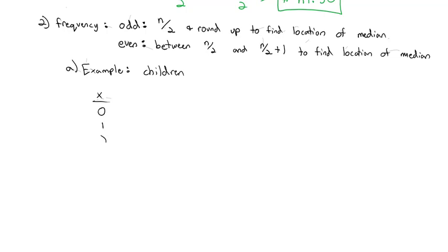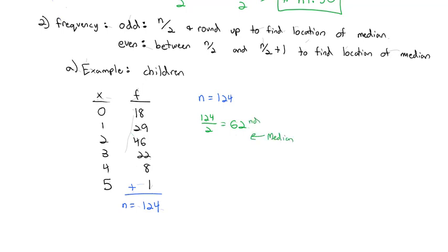Back to our example with the number of children, we had this frequency table of 0, 1, 2, 3, 4, 5 children with frequencies of 18, 29, 46, 22, 8, and 1. First thing I need to know is the total number of families that were interviewed, the total frequency, the n. I do that by adding the frequencies, and we found out there were 124 families in this survey. So if n is equal to 124, that's an even number. So when I do 124 divided by 2, that's going to give me 62. And the median is going to be between the 62nd and the 63rd data value.